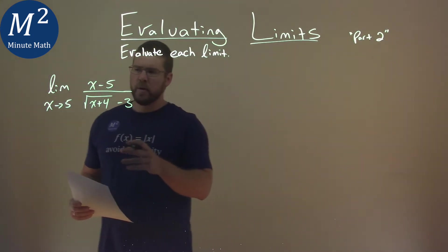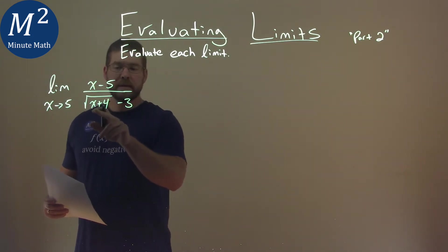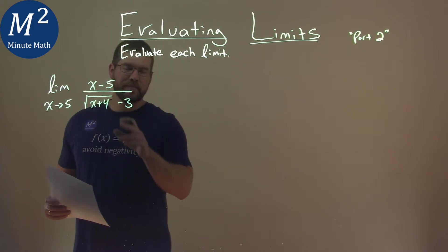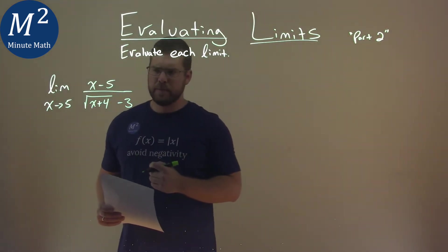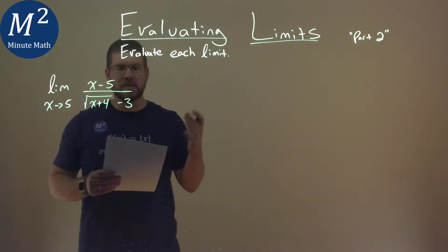Now, we can't evaluate it right as x equals 5. When 5 goes in for x in the denominator, we get square root of 5 plus 4 is 9, square root of 9 is 3, and we get 0 in the denominator. So I'm going to try to get rid of that square root and do something with it.